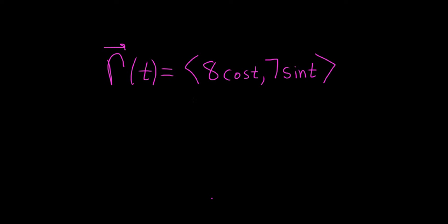We have a vector-valued function. It's given to us in what's called component form. Whenever you have these angle brackets like this, it's called component form.